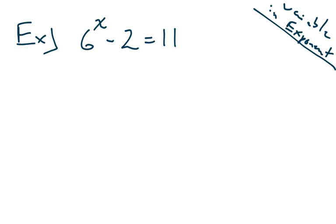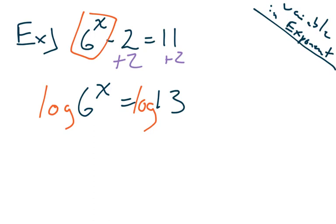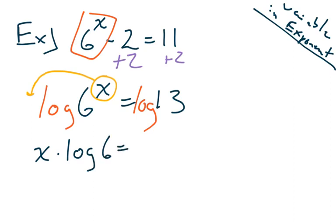X has been spotted in the exponent — agent number two, get ready! First we're going to isolate the exponent expression; we'll add two to both sides. But how do you solve for x when x is in the exponent? That's right — we're going to slap this equation with a log. We slap both sides with a log, and by properties of logarithms we cause the exponent to come tumbling down. We end up with x times the log of six.